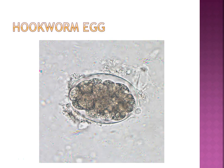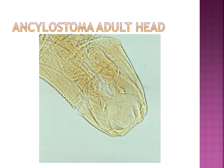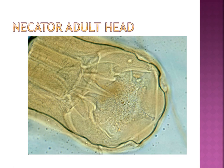Hookworms: you cannot tell the eggs apart. They have a 2-, 4-, or 8-cell embryo stage inside. The rhabditiform larva is the active feeding form; the filariform larva is the infective stage. The worms have a hook on the end. Necator has cutting plates; Ancylostoma has teeth. One-fourth of the world's population is infected. The worms penetrate the skin, usually at the feet. Itching at the entry site is called ground itch. Severe infections can cause microcytic hypochromic anemia and hypoproteinemia.